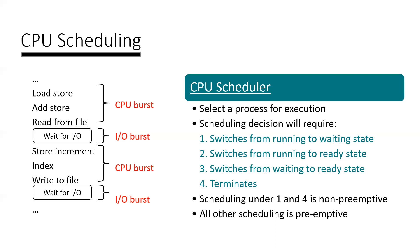How does execution perform? What does the scheduler actually do? It selects a process for execution. After that, there is some decision-making for execution. So scheduling requires decision-making. The scheduler is actually the decision maker, and it depends on our scheduling technique.